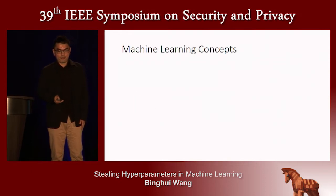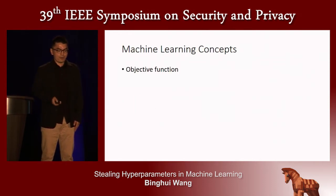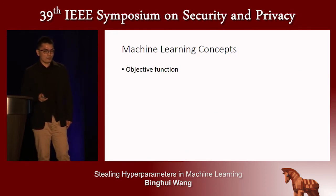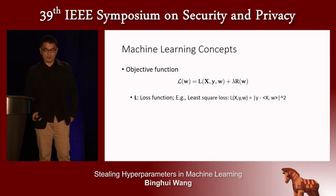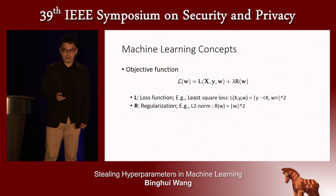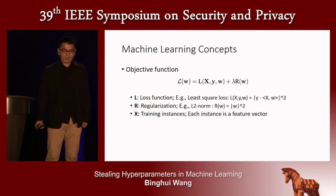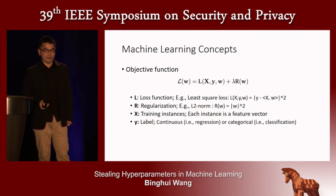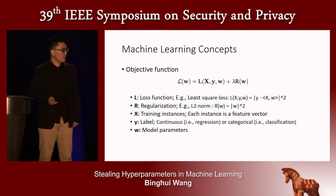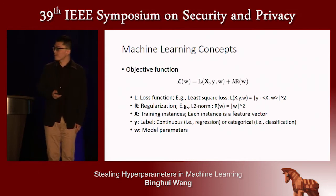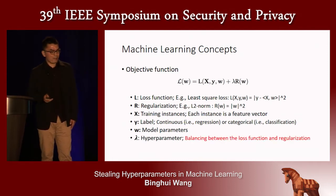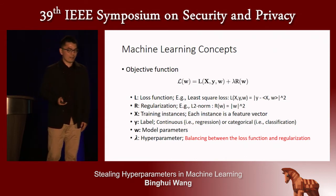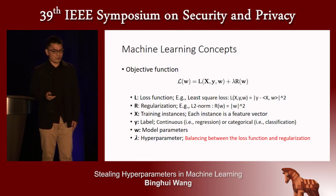For machine learning background, one key concept is the objective function. In this work we focus on supervised machine learning. The objective function consists of a loss function and a regularization term. The loss function can be least squares, and regularization can be L2 norm. The loss function is related to the training instance, the label, and the model parameters. The label can be continuous for regression or categorical for classification. Lambda is the hyperparameter that balances the loss function and regularization.